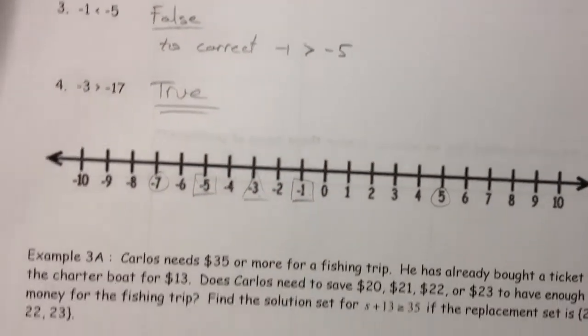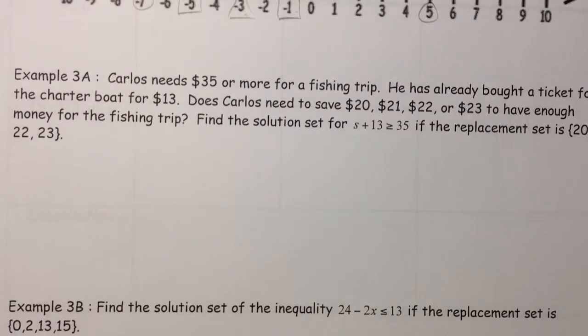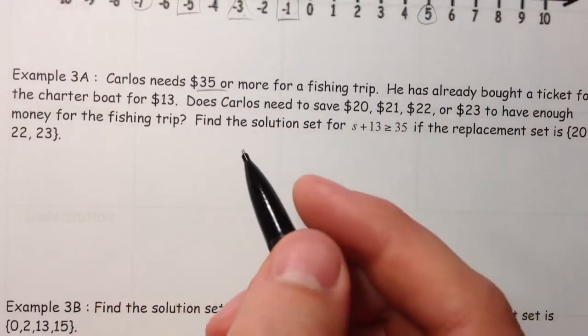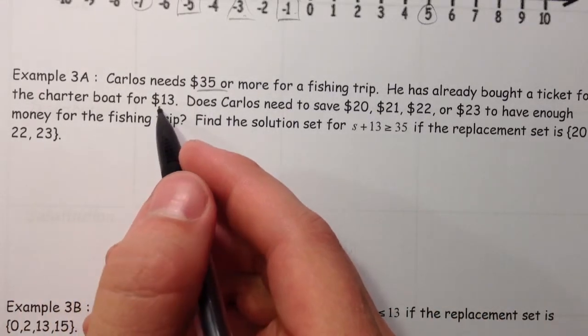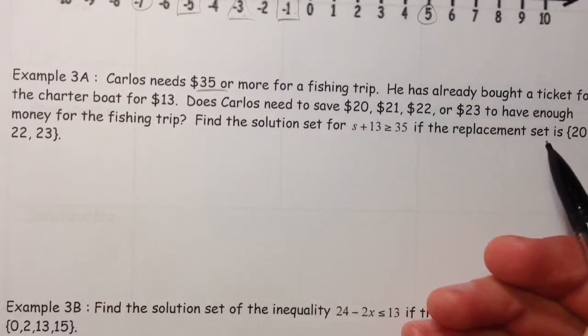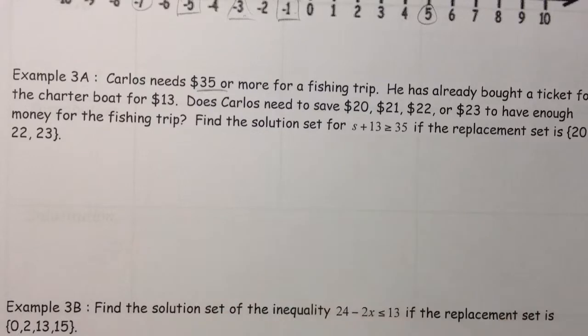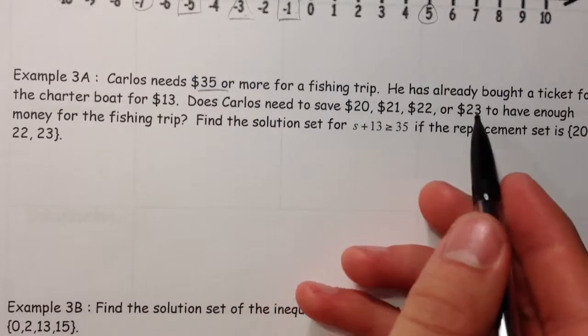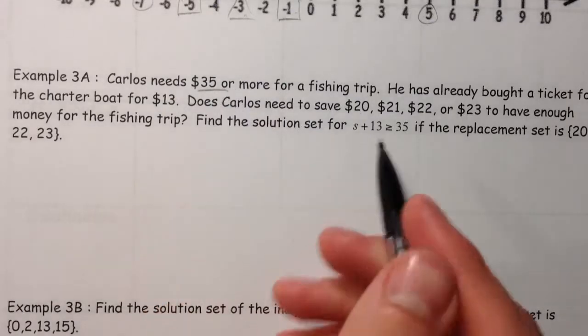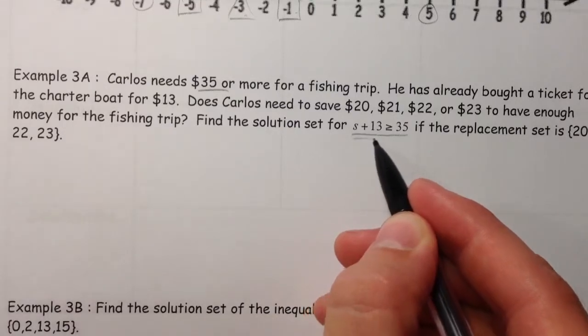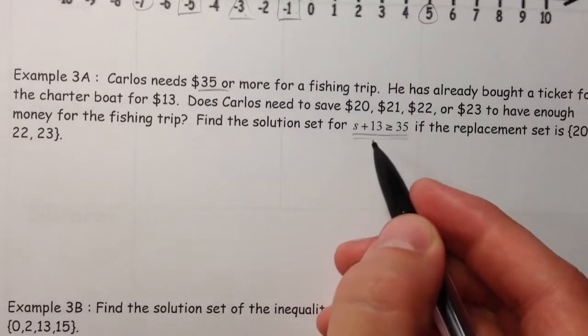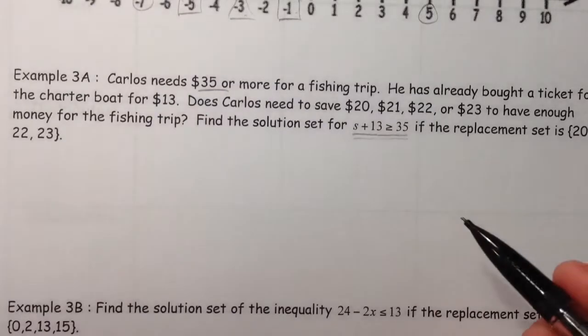So, let's see, sort of in a real life situation, we're going on a fishing trip. Carlos needs $35. And part of that $35 is that he already bought a ticket for the charter boat. So, how much does he need to have, save, in addition to that 13, to be at the 35? So, does he need to save 20, 21, 22, 23? When will he have that 35? And so, we've written this statement here.